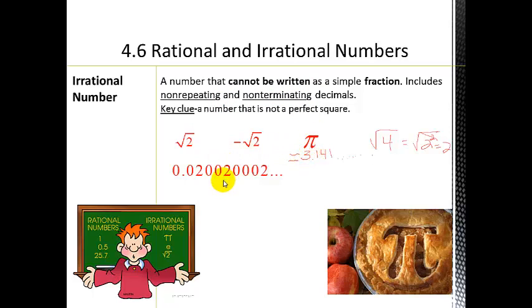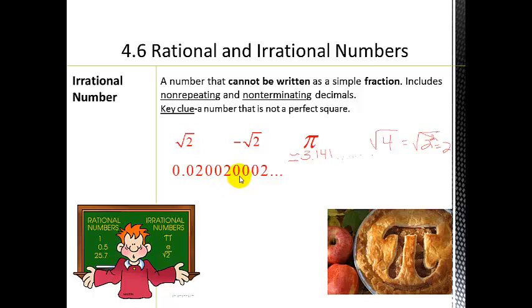This decimal doesn't have a pattern. If it were 0.20202..., we'd see a pattern. But since it's non-repeating, this is also an irrational number.